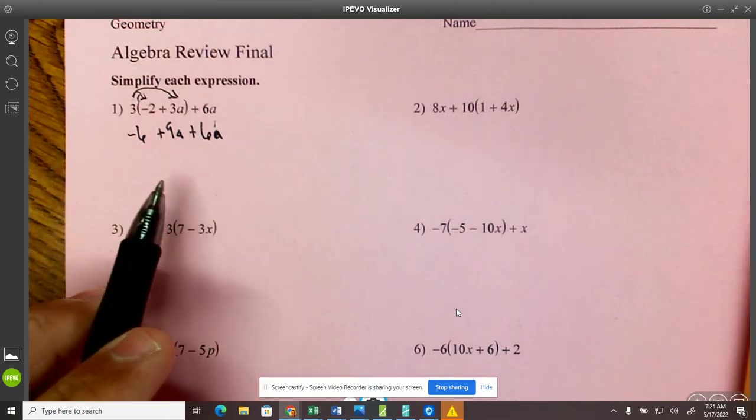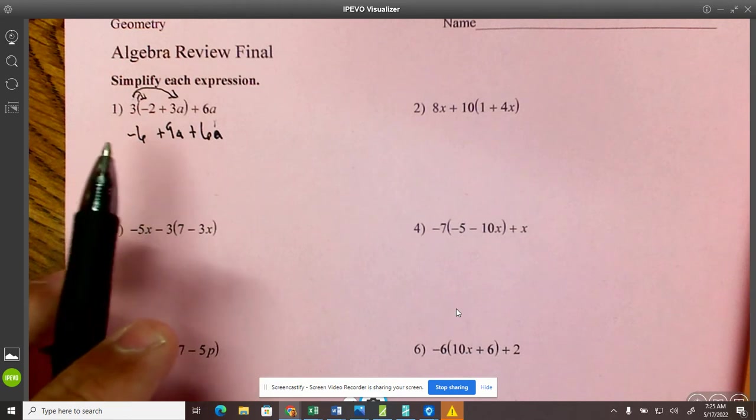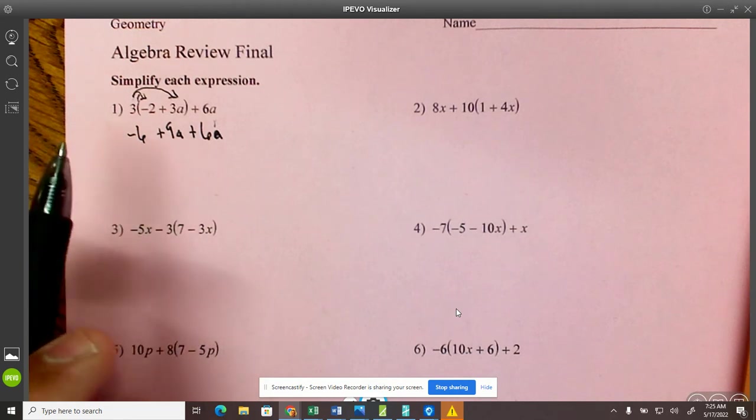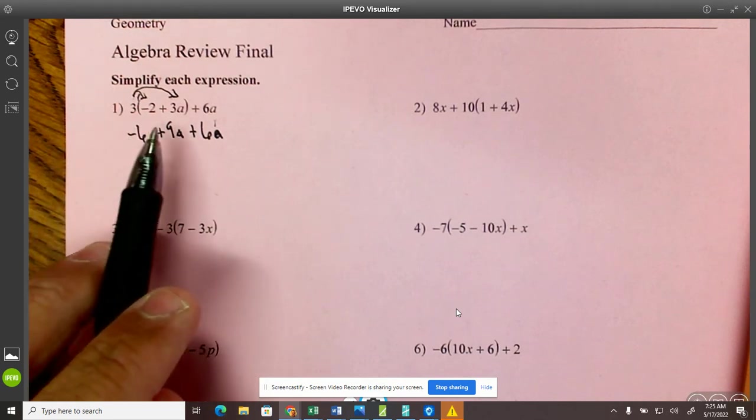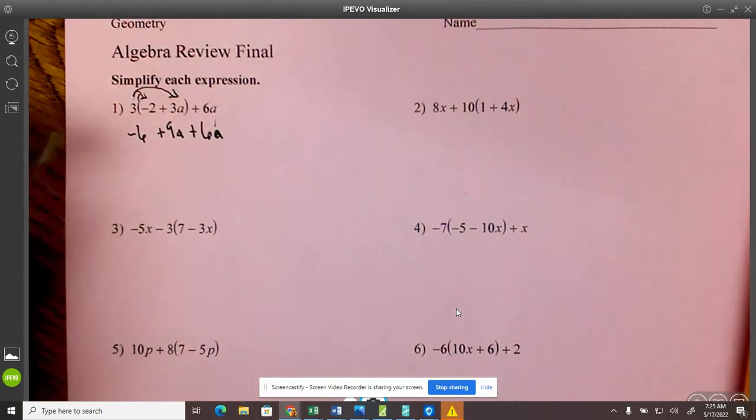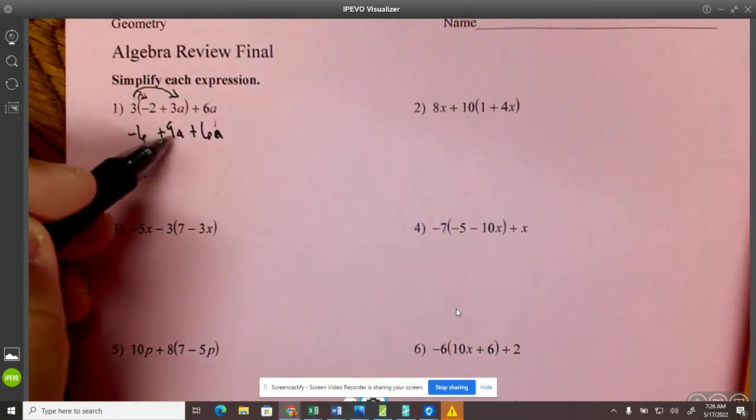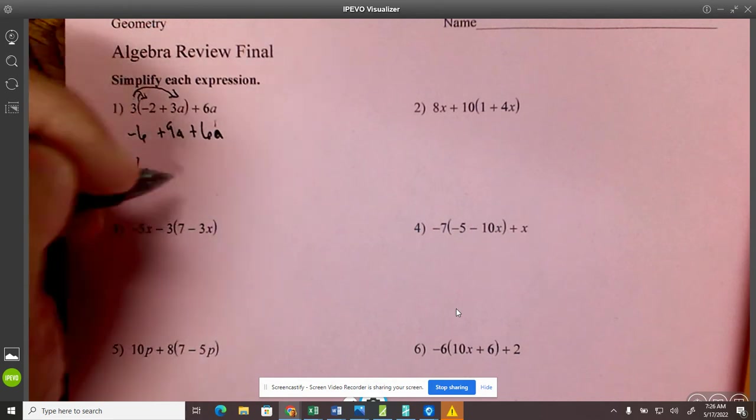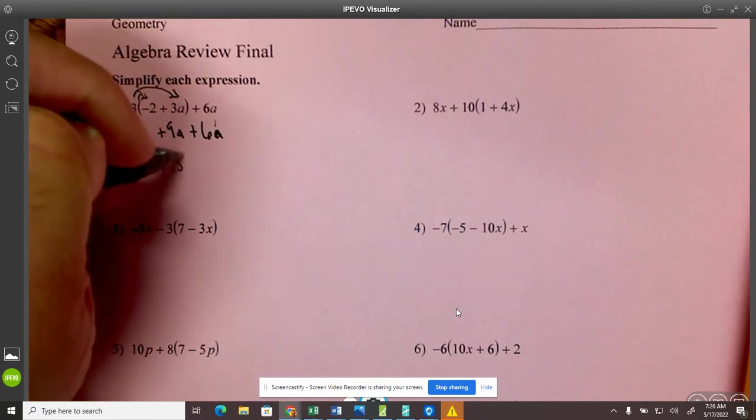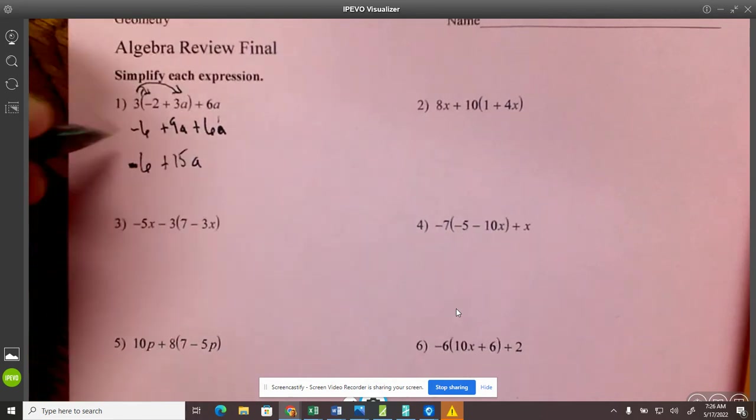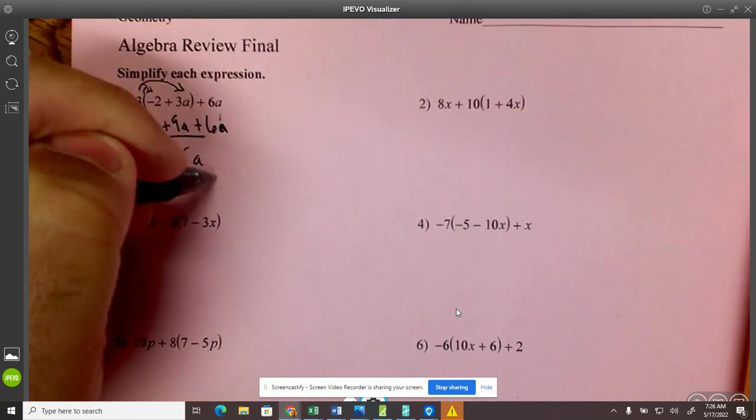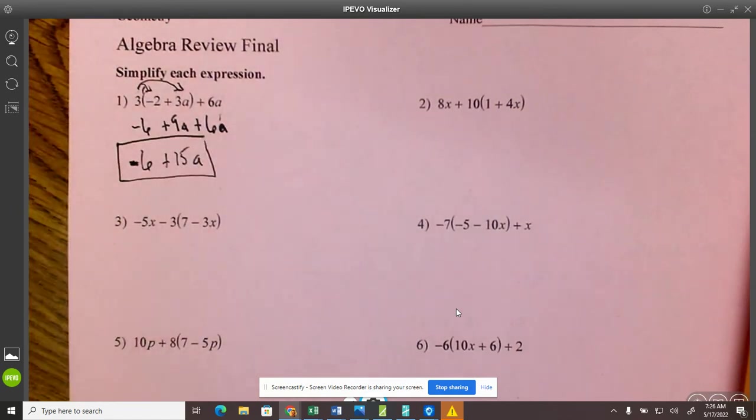Now you're not quite done because it says simplify. So you have to combine like terms. Now I can only combine terms that are the same. Negative 6 is not the same as 9a and 6a. So that stays the same. There's nothing I can do about that. And then 9 plus 6 is 15, so that becomes 15a. And that is my final answer on that.